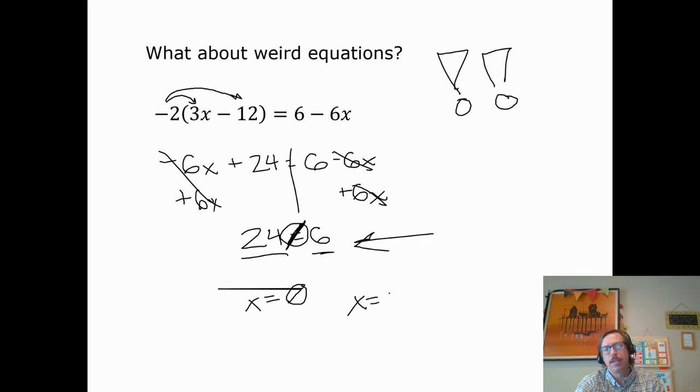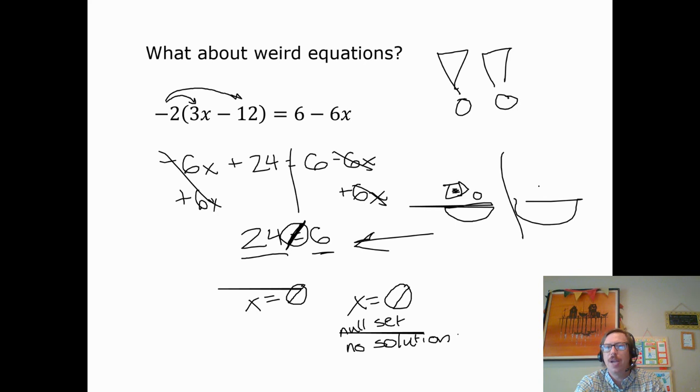Well, some of you are like, wait, 24 can't be 6. 24 is not the same thing as 6. If I have 24 pieces of bubblegum, it is not the same as having 6 pieces of bubblegum. These numbers are representing whole units. They can't be equal. They do not equal, in fact. And 24 will never be equal to 6. So in this case, we have no solution. We can write that like this. That's called the null set for no solution. This problem can never be solved.